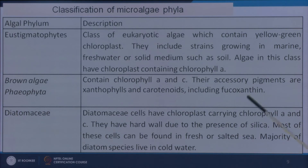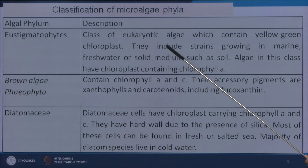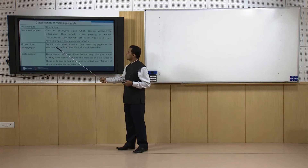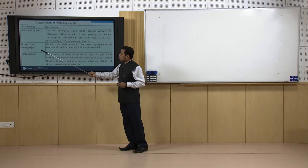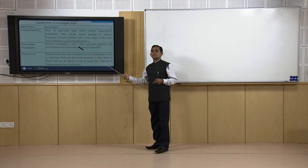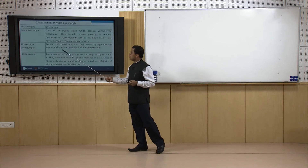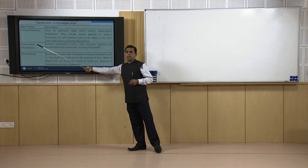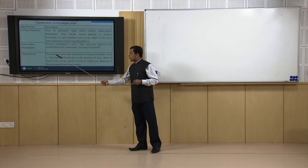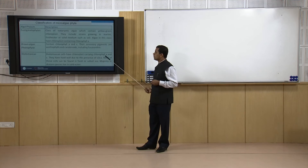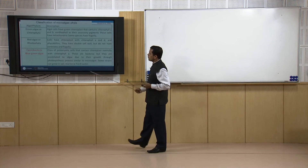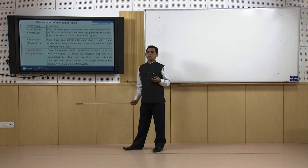Other types include Diatomaceae, brown algae (Phaeophyta), and Ochrophyta. Brown algae contain chlorophylls A and C with xanthophylls and carotenoids including fucoxanthin as accessory pigments, giving the brown color. Diatoms are another type of algal cell with chlorophylls A and C. These are different types of algae that have been tested for lipid production, with cyanobacteria (blue-green algae) having the greatest capacity to produce lipid.